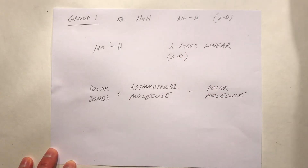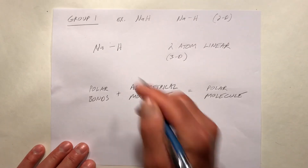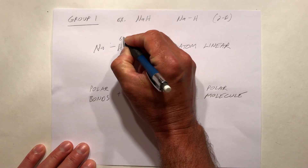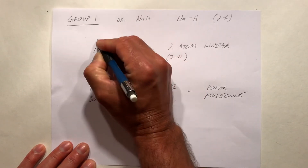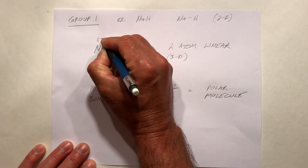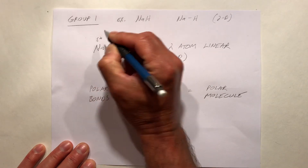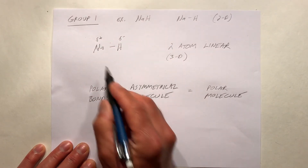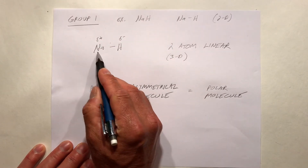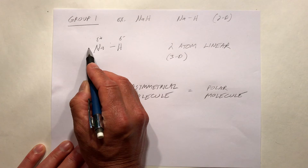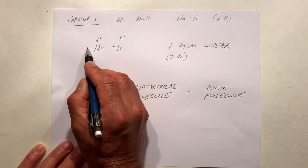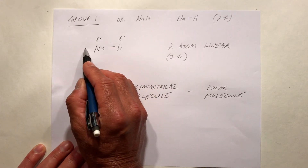There would be polar bonds here. Hydrogen would be a little bit more electronegative, so it would get a delta minus. Sodium would be delta plus as a result.